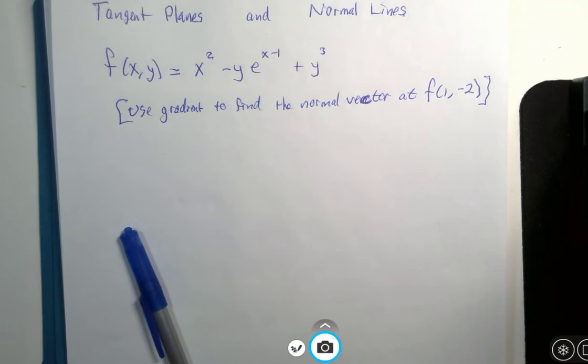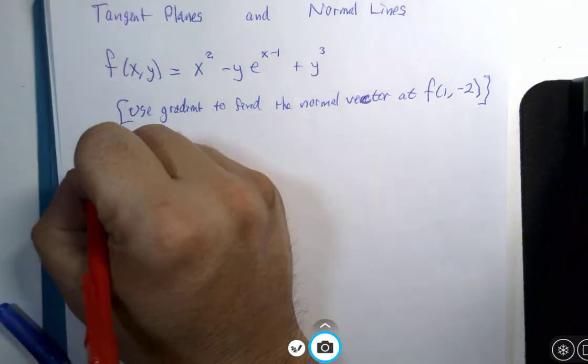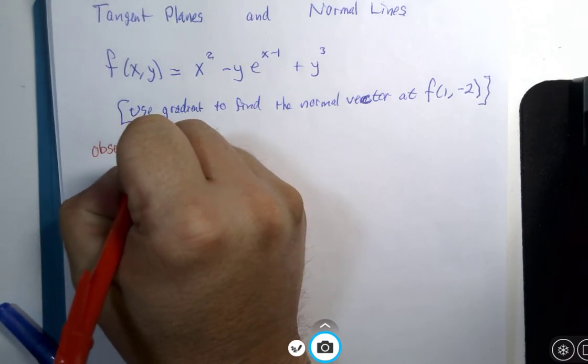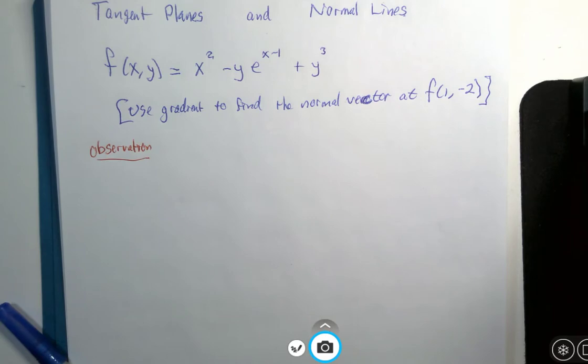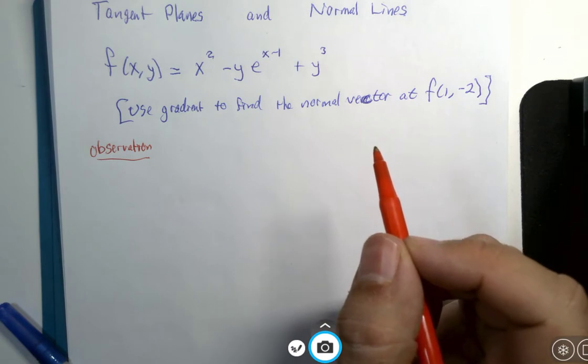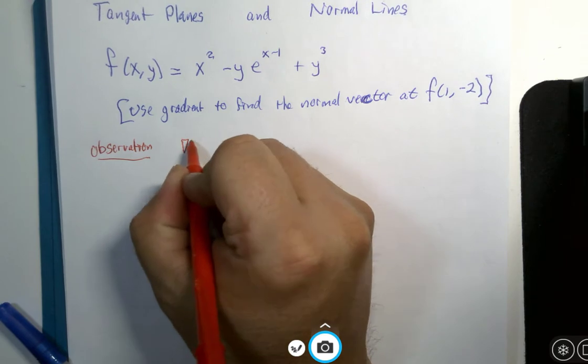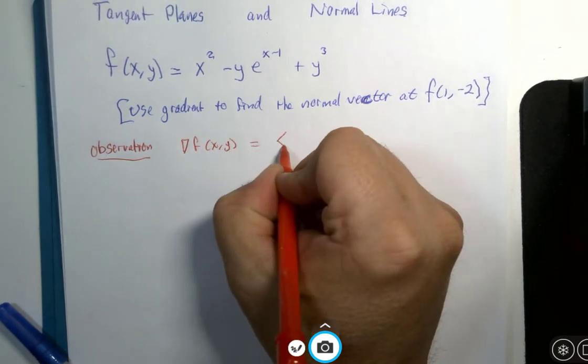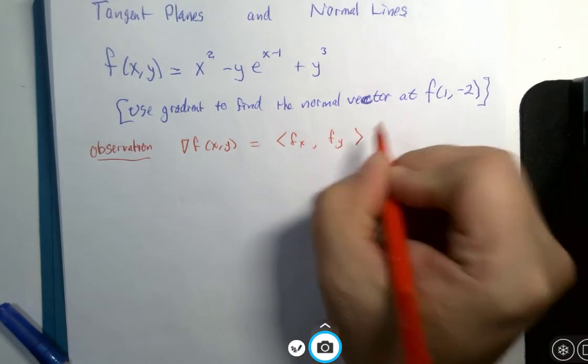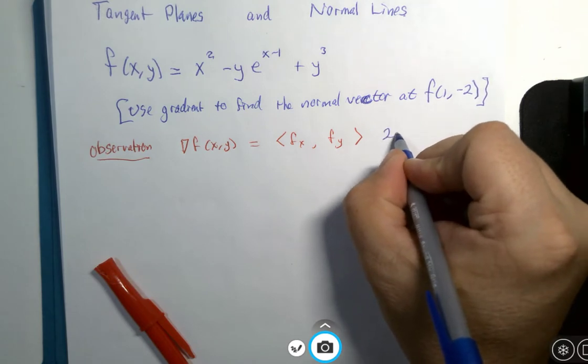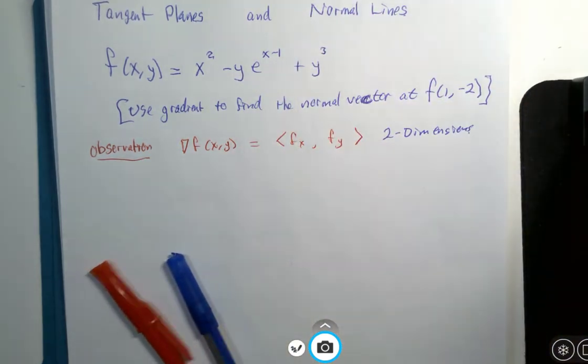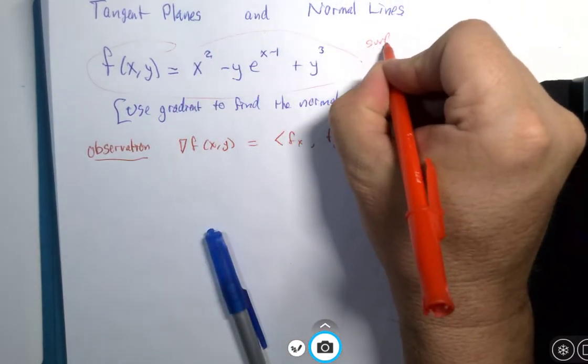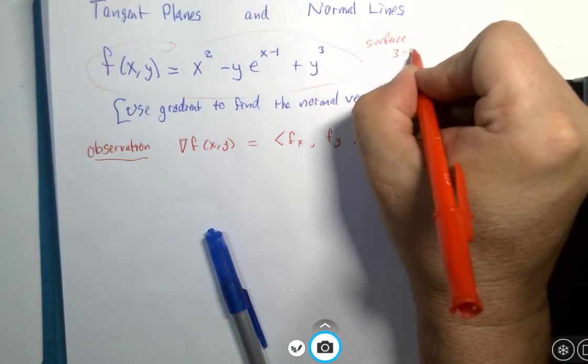I want to first make an observation. Instead of letting a classroom with students sweat over this, I am going to more directly guide you to the piece of information that is most critical here. So the gradient of f of xy will have the x and y partial derivatives in it. But that is only two dimensions. This is a surface. It has three dimensions.